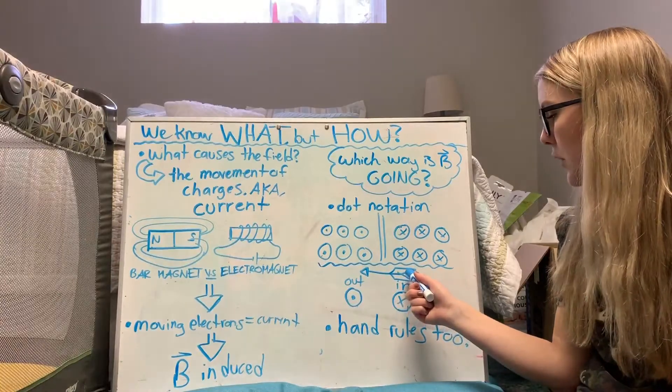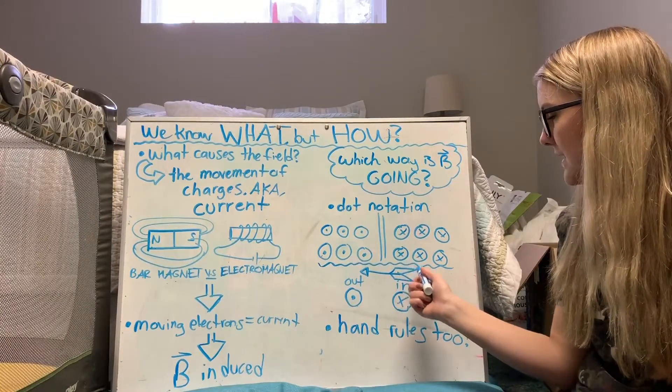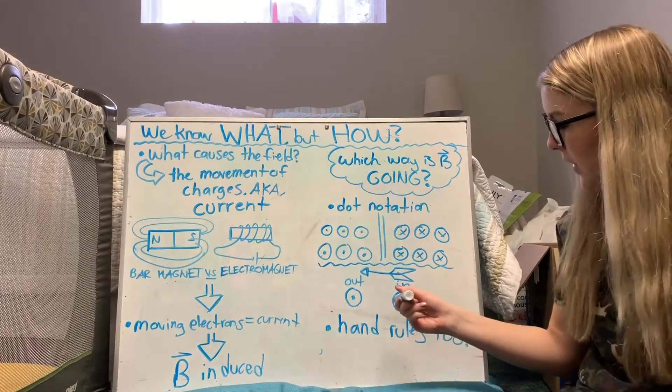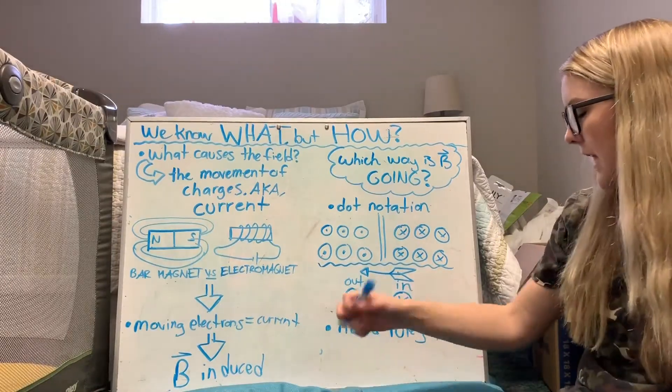But if the arrow was going away from you, you would probably see a little X like that, so then you can imagine that the arrow is flying away from you that way. So arrow coming out, arrow going in.